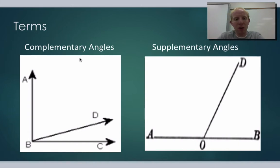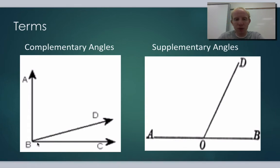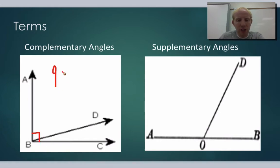The first term is what we call complementary angles. If we have two angles that share a right angle, or a perpendicular line, then the two angles are complementary and add up to 90 degrees. So if you ever see two angles share a right angle, you know they must add up to 90.